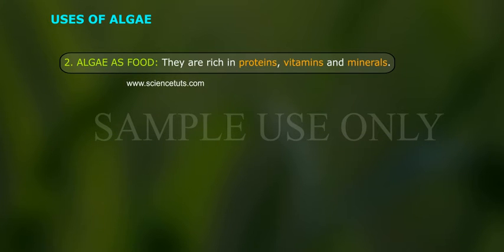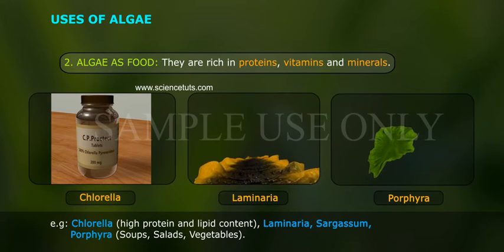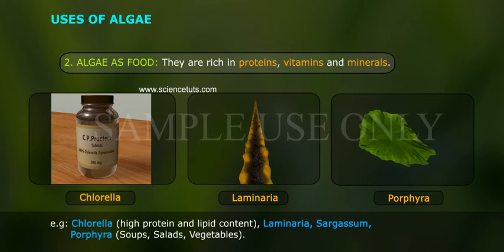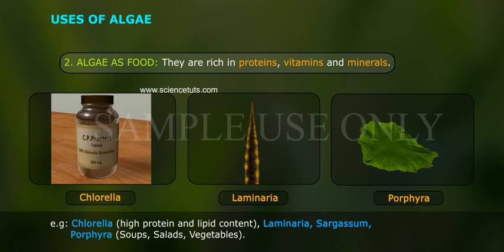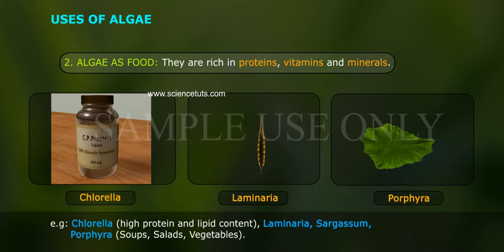Algae as food. They are rich in proteins, vitamins and minerals. For example, Chlorella has high protein and lipid content. Laminaria, Sargassum, and Porphyra are used in soups, salads, and vegetables.